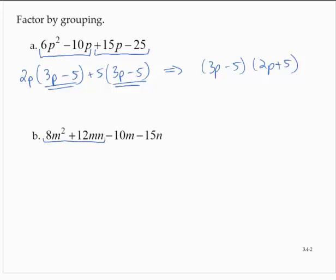The first two terms share a factor of 4m. So I'd have 4m by 2m plus 3n.